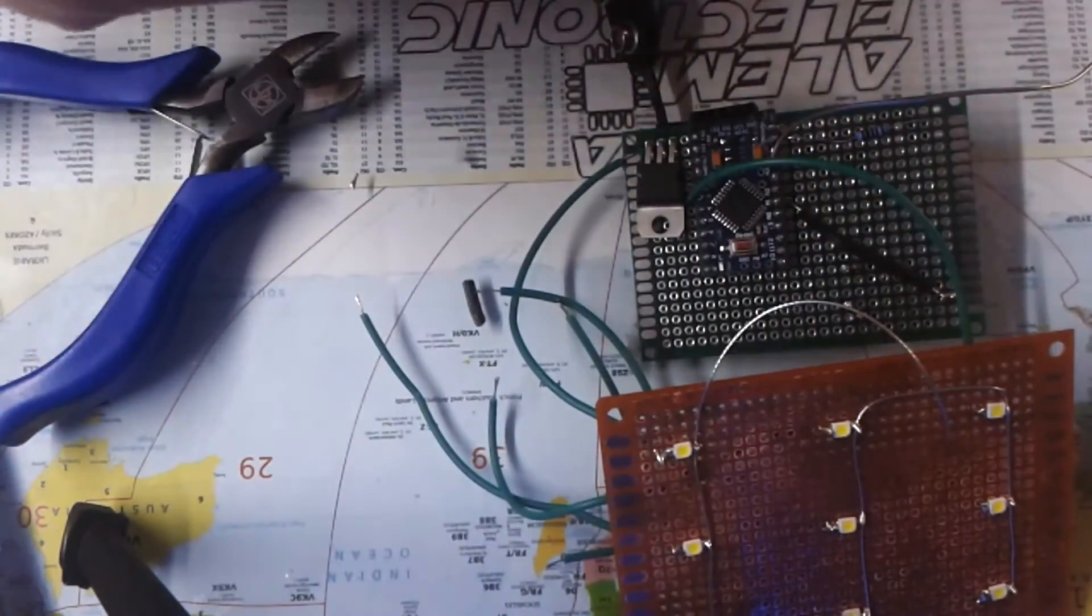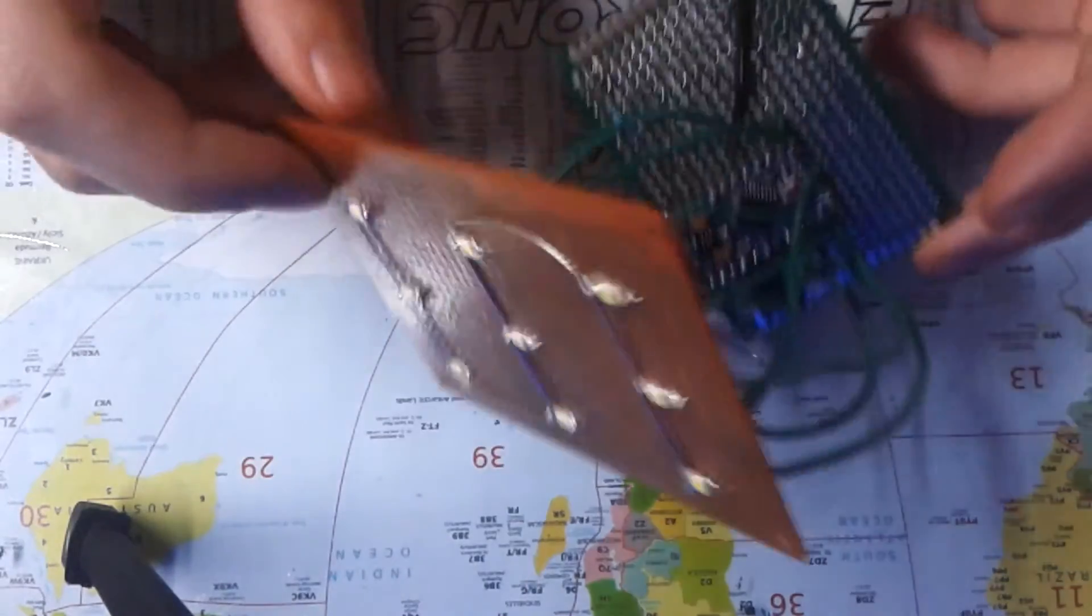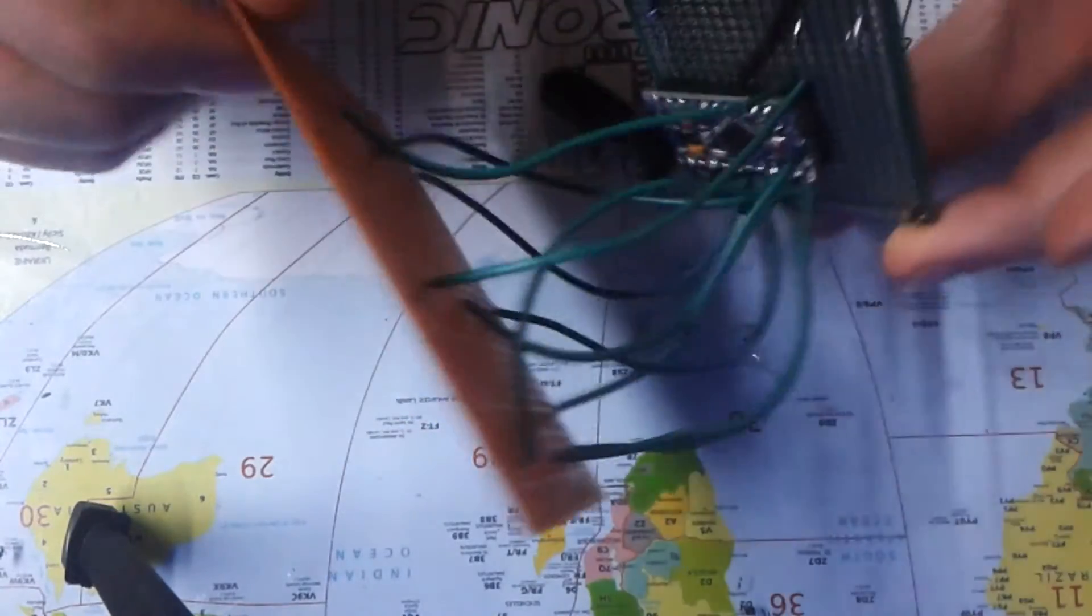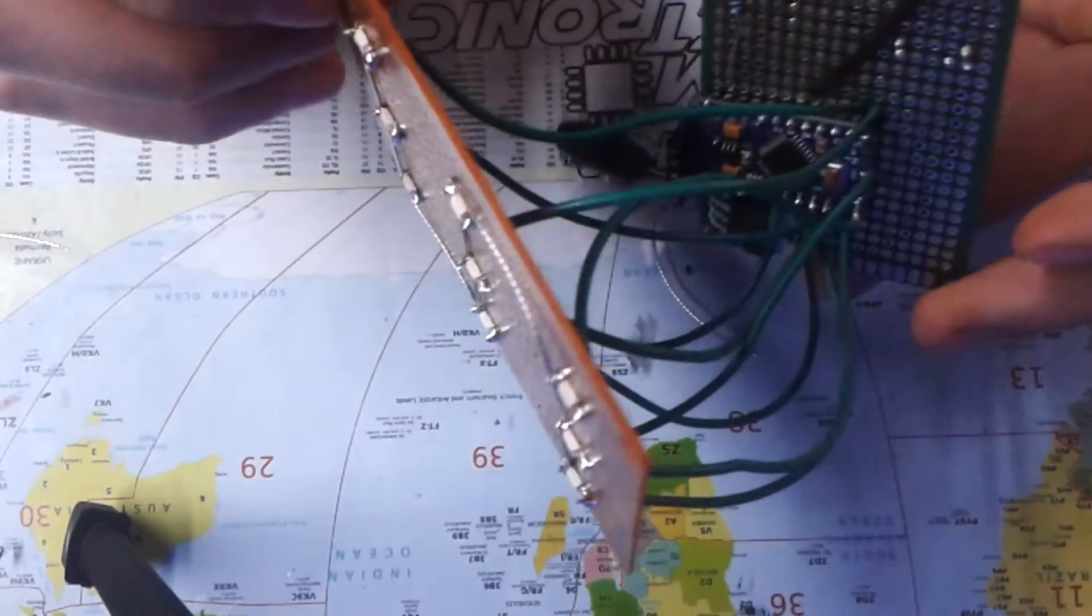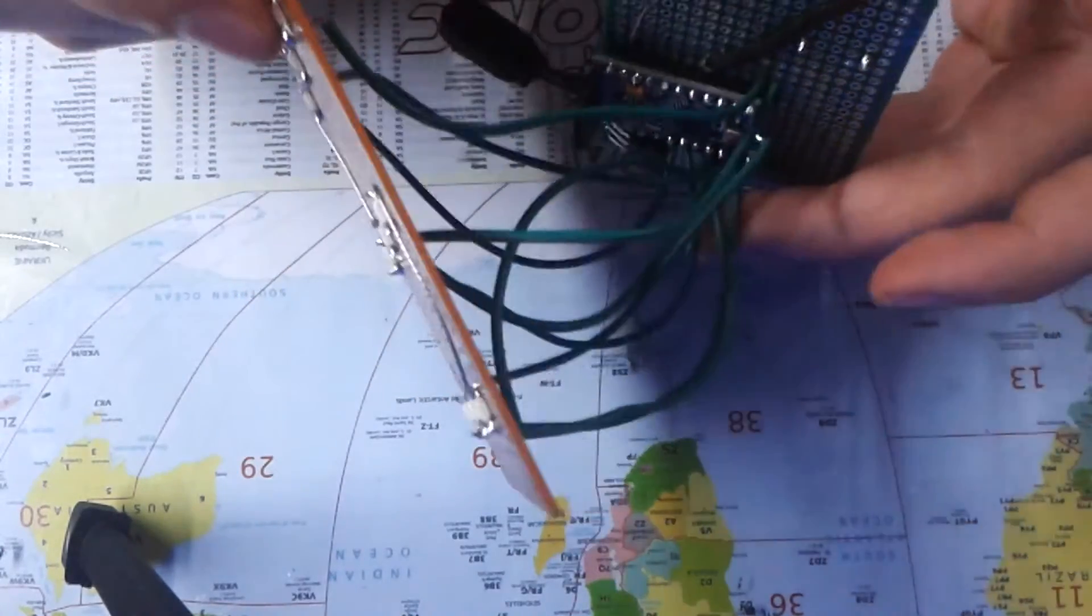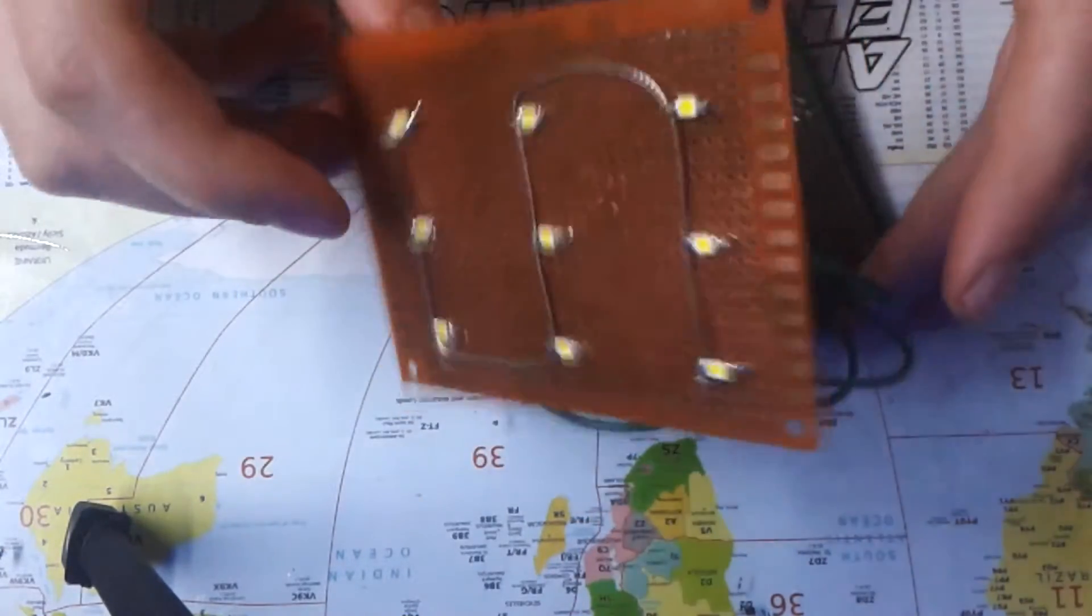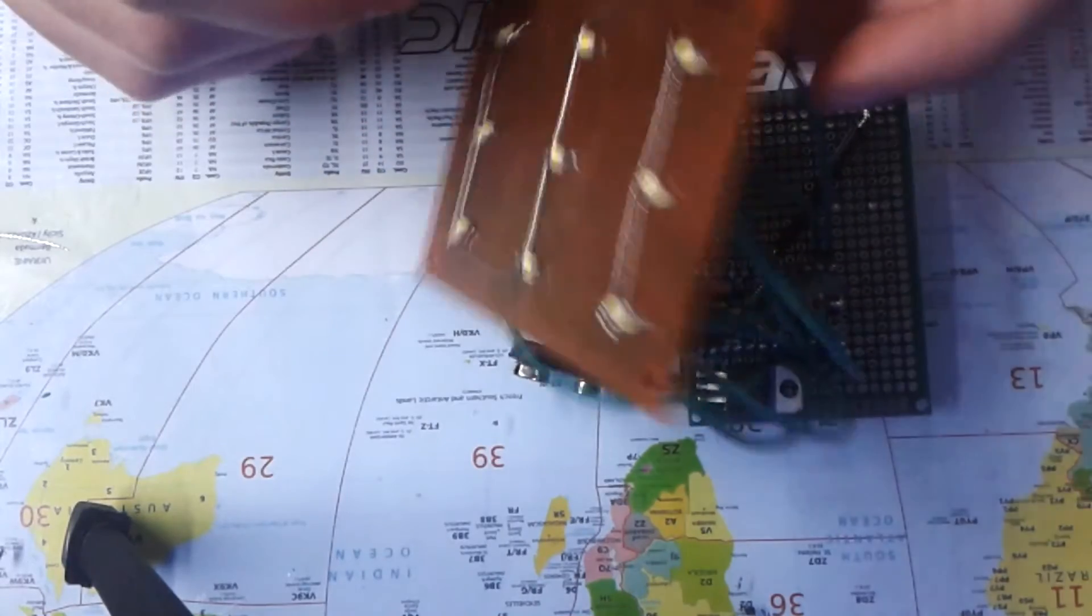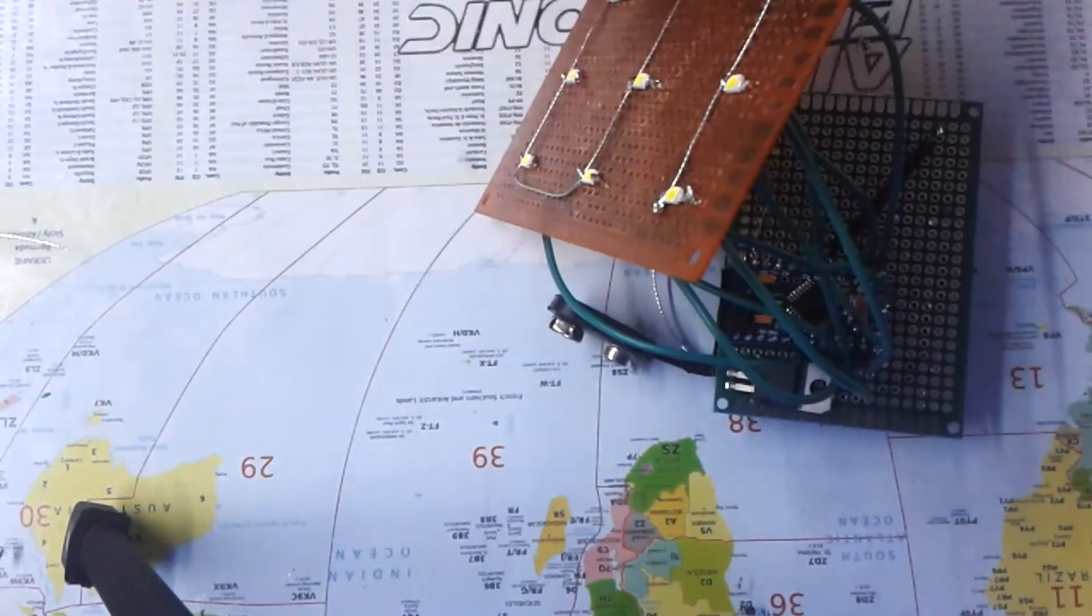We just soldered all the positive leads of the LEDs to Arduino. It's a bunch of wires, and of course this ground was connected to ground too. So we need to test this out and see, does it work?